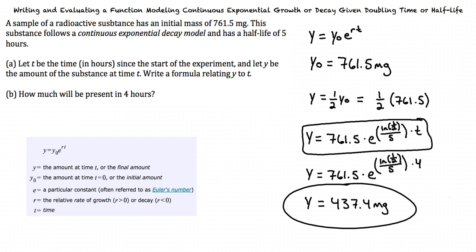Okay, I think I get it. First, we look at the equation y equals y sub 0 times e raised to the rt, and using the values we were given in the example, we write an equation relating y to t. Next, we take the values we found and solve for a given t to find out how much substance is left after that amount of time. You got it!